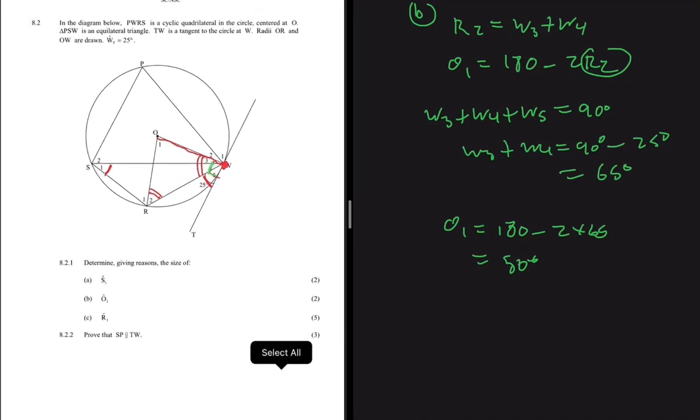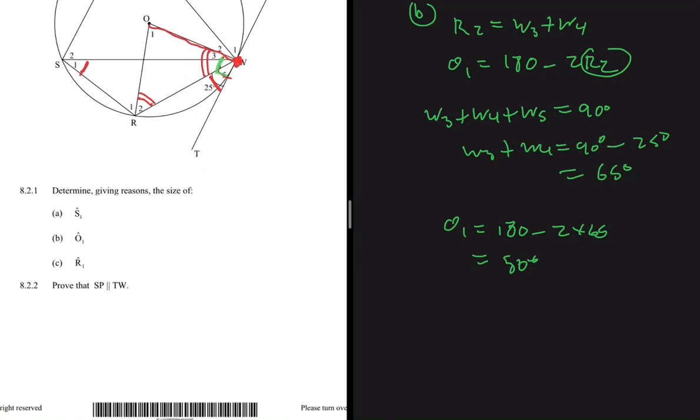Part a has two marks, b has two marks, and then c has five marks. Now let's do 8.2.2.